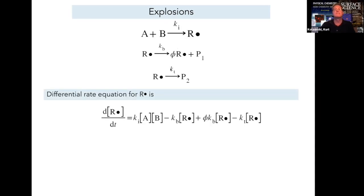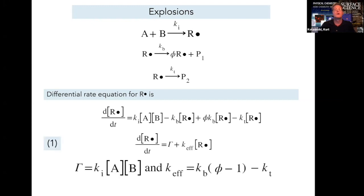Let's generate, for our three-step mechanism here, a differential rate law for the concentration and how the concentration of R-dot changes as a function of time. We will add in all the terms that generate radicals, and we subtract off all the terms that consume radicals. We'll rearrange this form into this simpler gamma plus K-effective times R-dot concentration. Gamma is just the rate of the initiation step, where this effective rate constant is equal to the branching rate constant times phi minus 1 minus the termination rate constant.